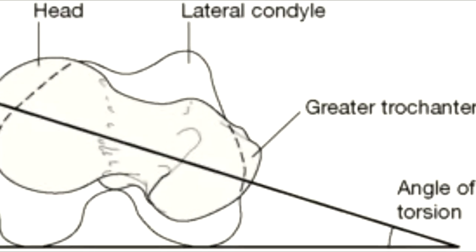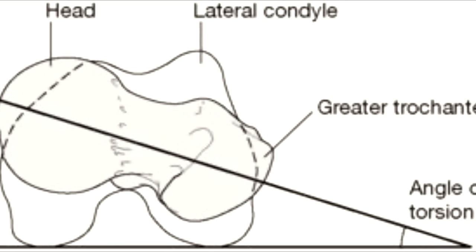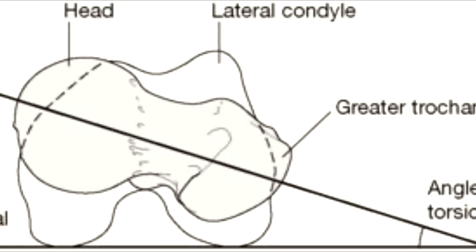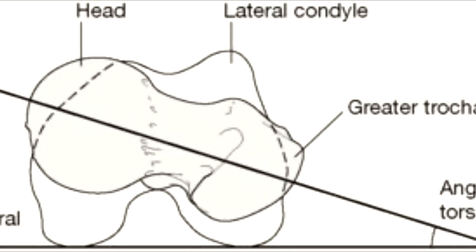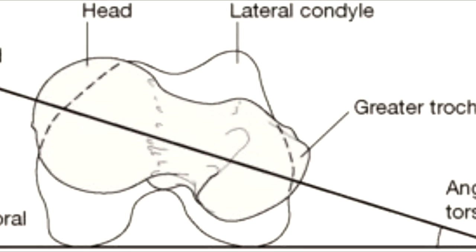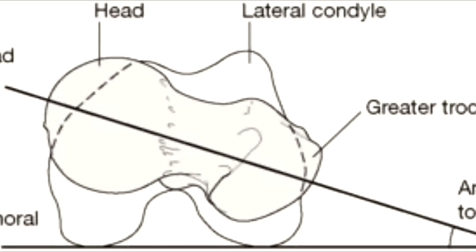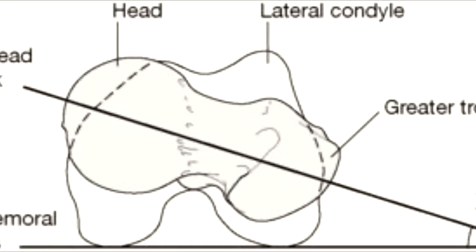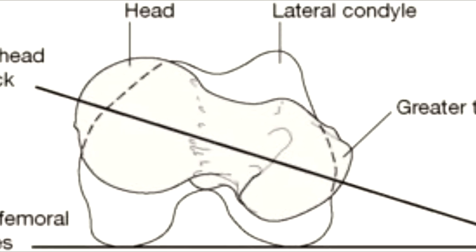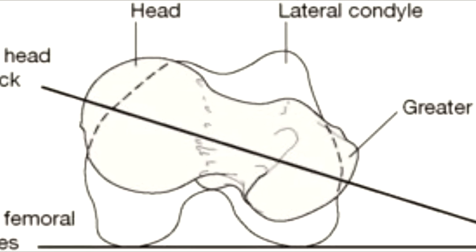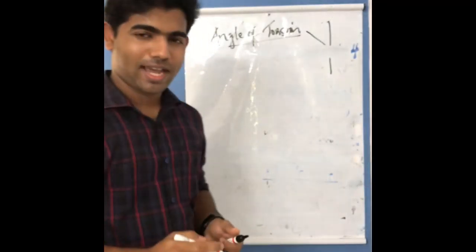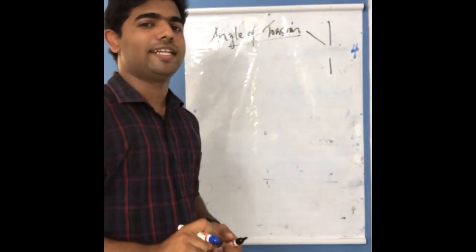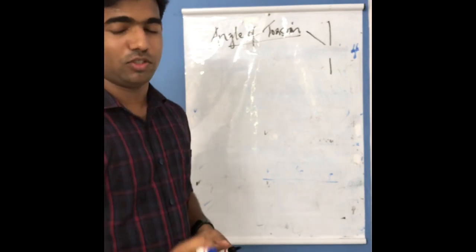Just have a look at the following diagram for better clarity. You can see the angle of torsion - have a look at the greater trochanter, the lateral and medial condyles shown in the dotted line, the head of the femur, the axis through the head and neck, and the axis through the condyles. This is all about the angle of torsion, which is usually 15 to 20 degrees.